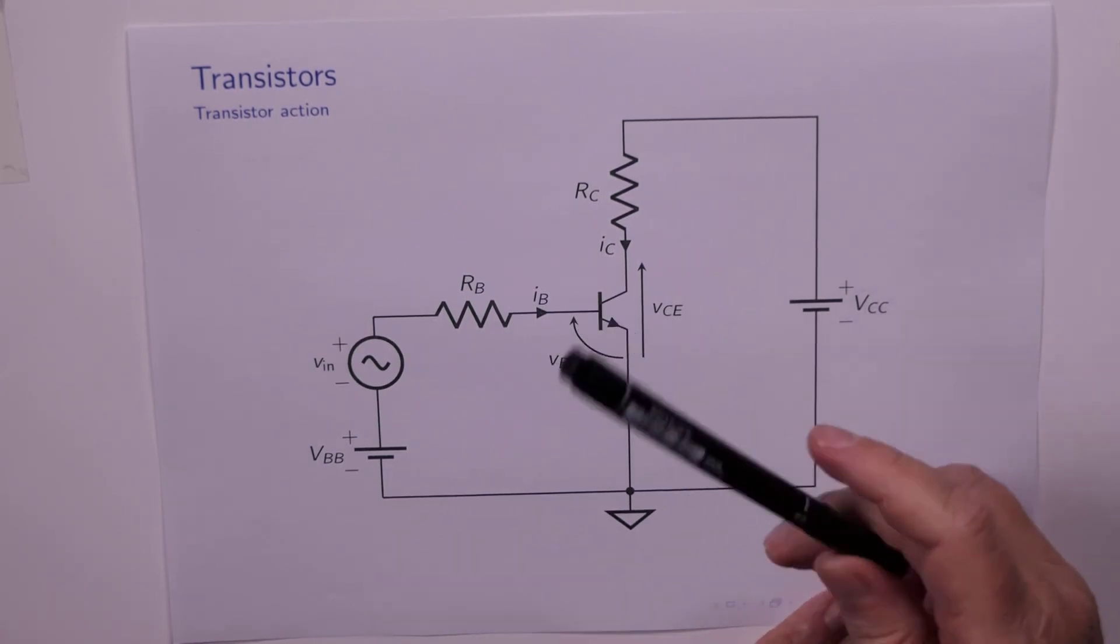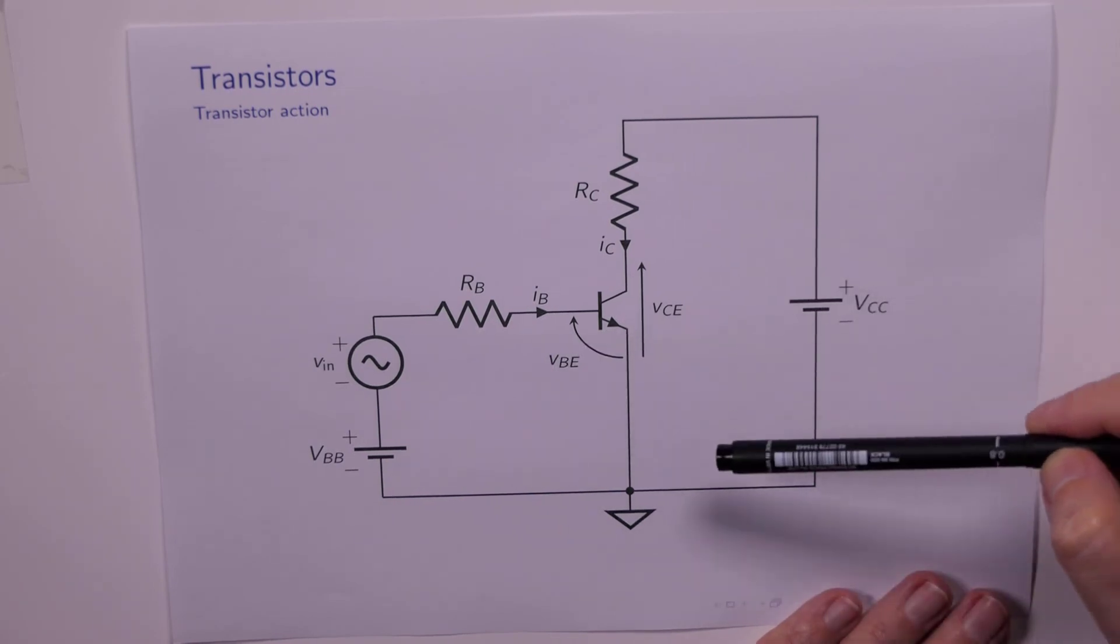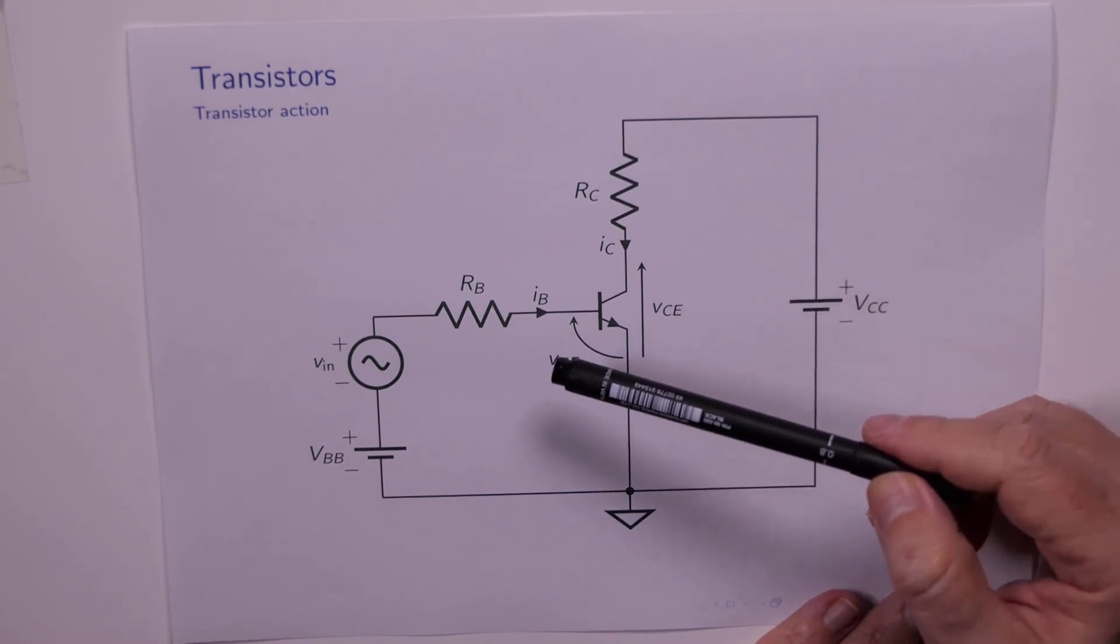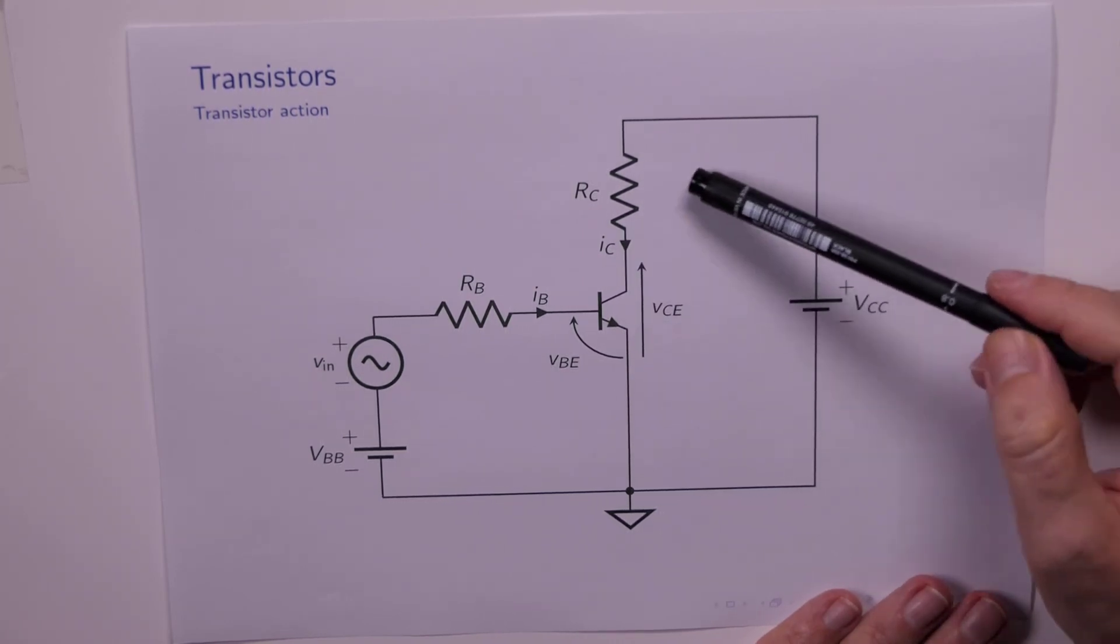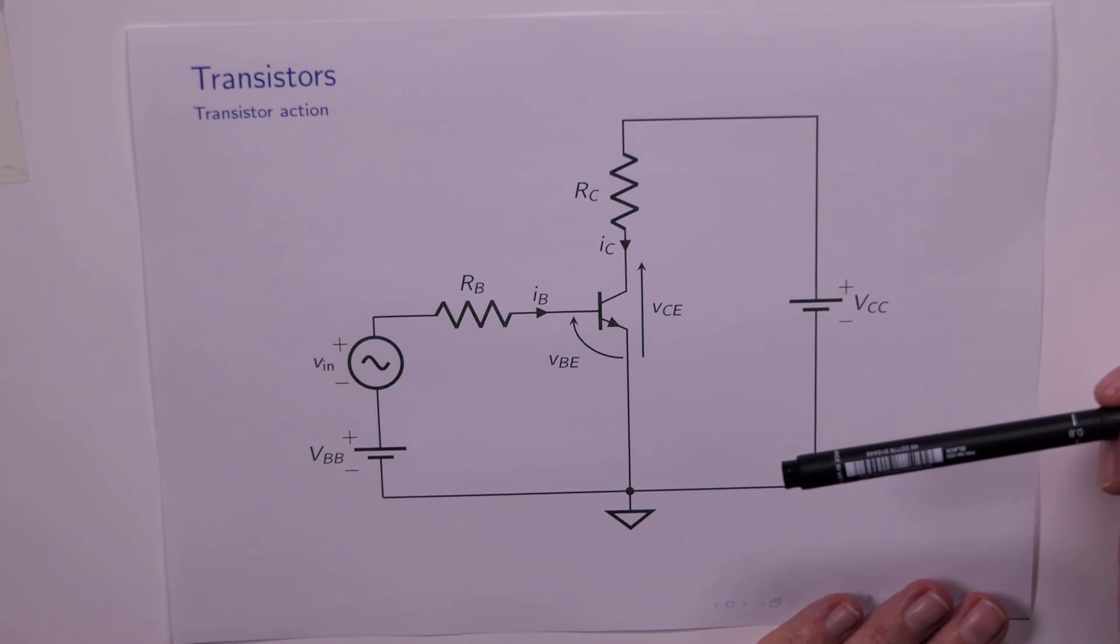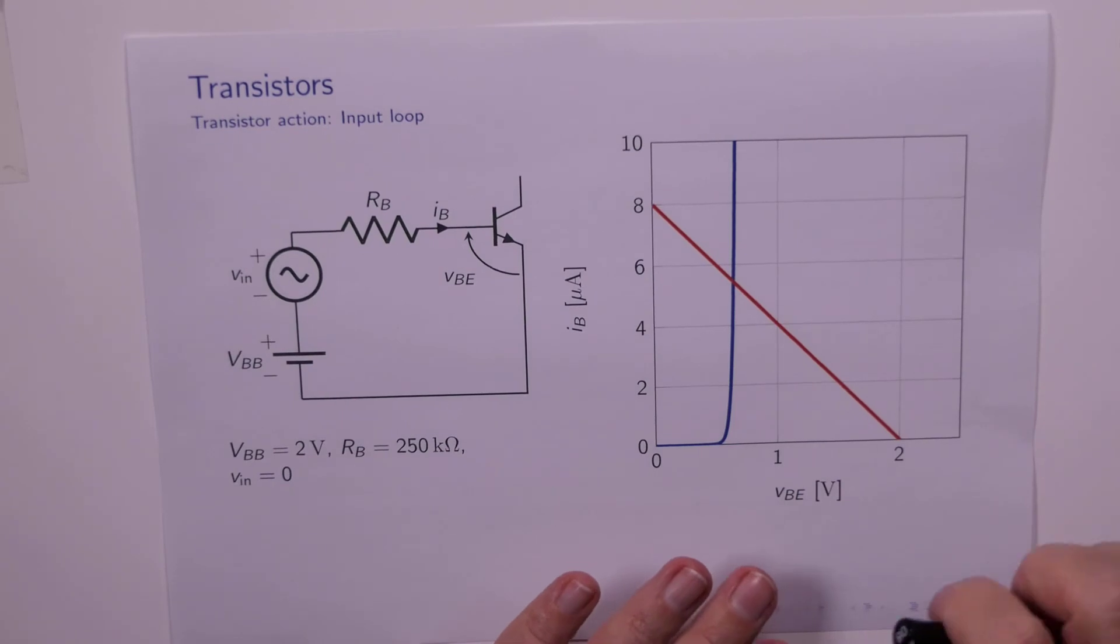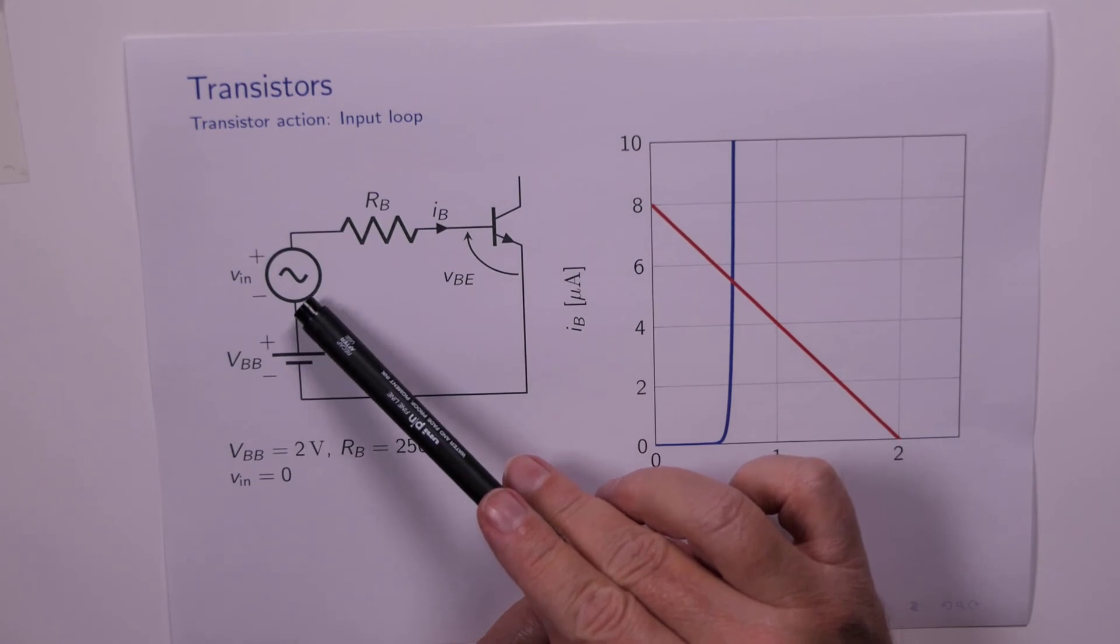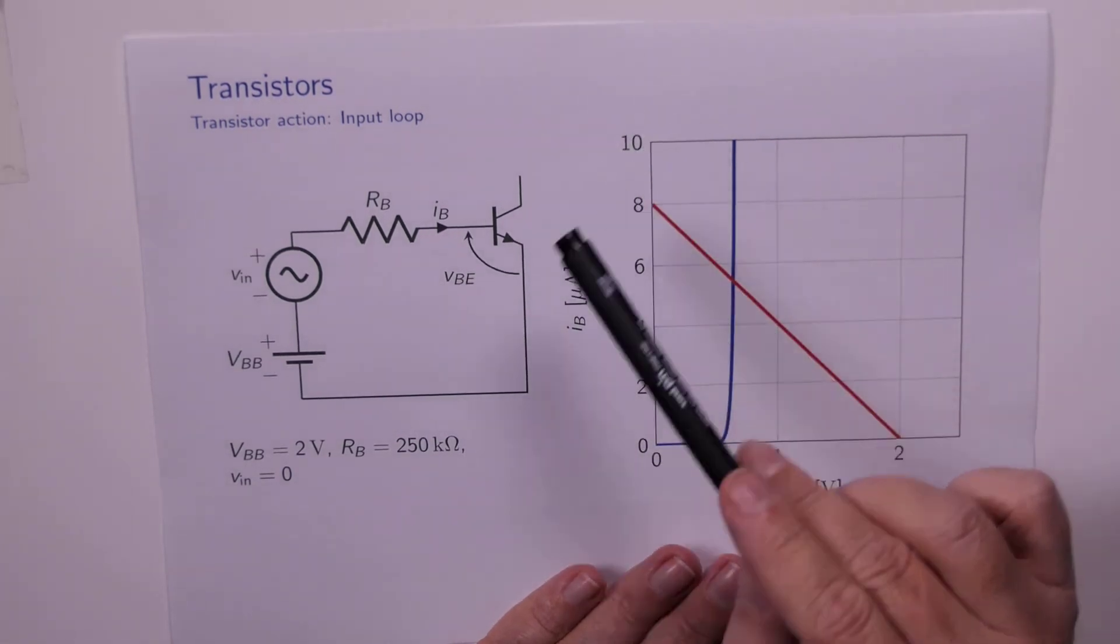We're interested in seeing what happens around this what we call the input loop, and we're also interested in what happens around what we call the output loop. We're going to investigate this input loop using the input terminal characteristic and we're going to investigate what happens at the output here with the output characteristic. So let's start with the input. Here's the input loop, this base voltage we're calling VBB, the small signal voltage resistor, and just the base emitter junction. We've just ignored the rest of the circuit for now.